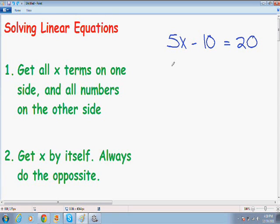I wrote the steps for you on the left-hand side of the screen in green, and step number one is you want to get all the x terms on one side, and you want to get all the other terms on the other side. So we have a 5x term right here. We also have a negative 10 term, which is just a number, and we have a 20 term as well. So we want to keep the x on one side, and we want to get the numbers on the other side.